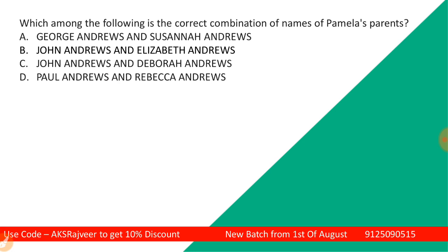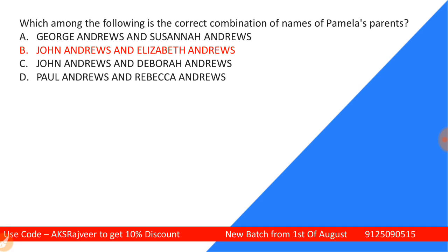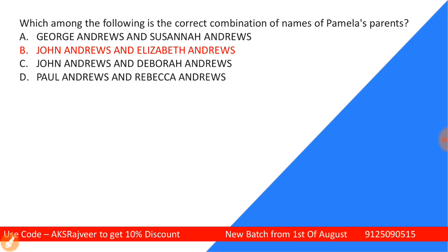Next question: Which among the following is the correct combination of names of Pamela's parents? Options are George Andrews and Susanna Andrews, John Andrews and Elizabeth Andrews, John Andrews and Deborah Andrews, or Paul Andrews and Rebecca Andrews. The correct answer is John Andrews and Elizabeth Andrews — John Andrews is the father and Elizabeth Andrews is the mother.